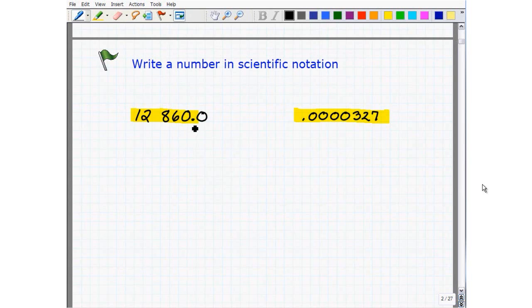Well, you should move the decimal point here. 1, 2, 3, 4. Because now the new number would be 1.2860.